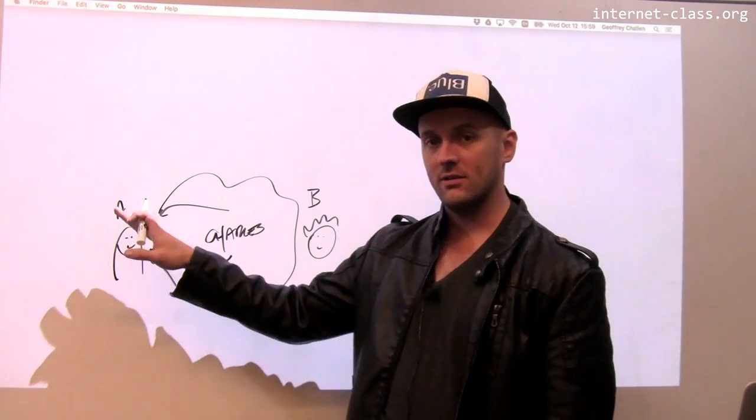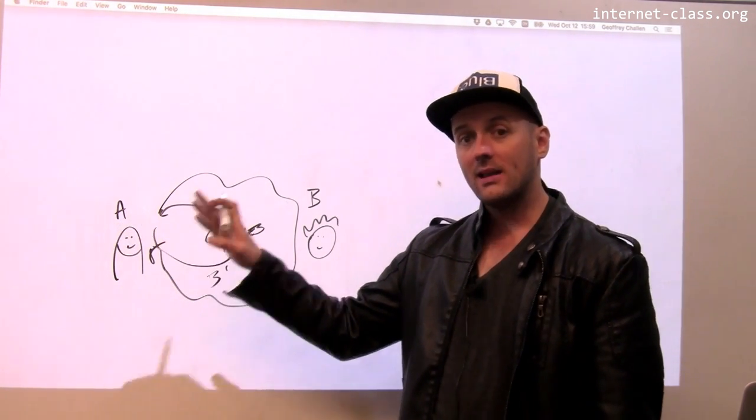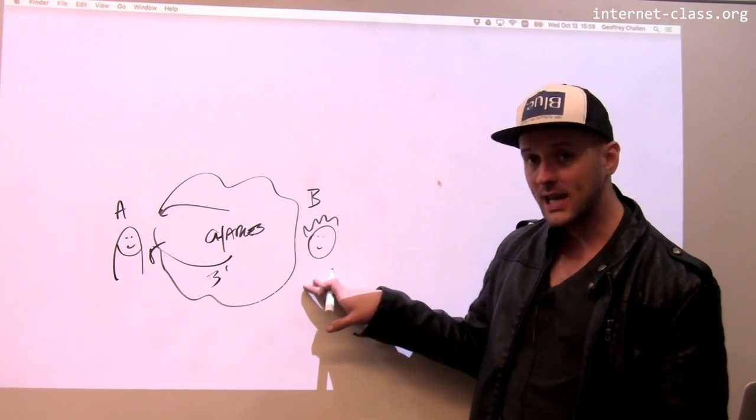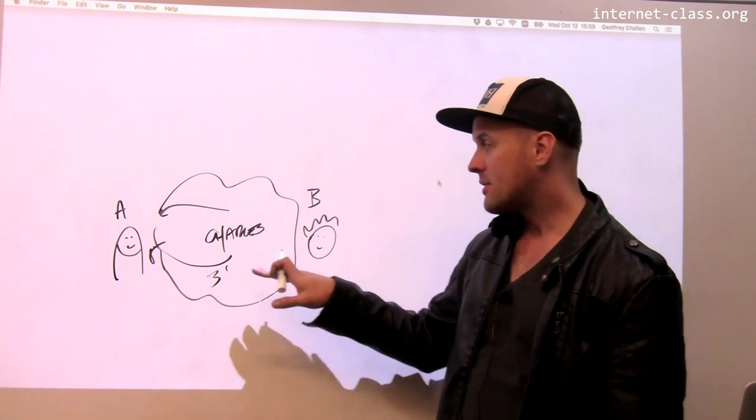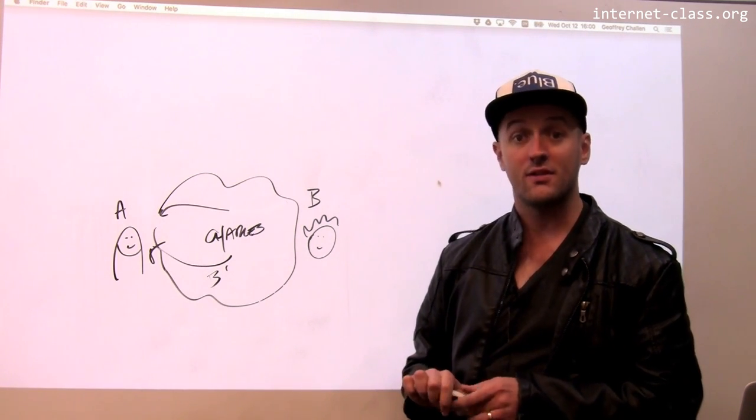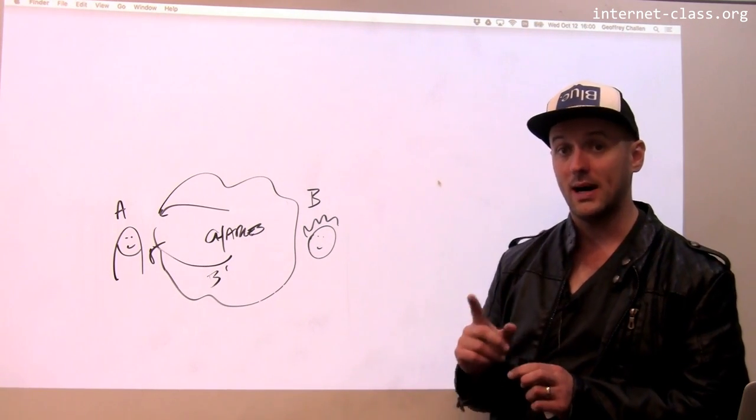So when Alice asks for Bob's public key, Charles sends back his own public key, and then Alice will send an encrypted message thinking that only Bob can decrypt it with Bob's private key. But in reality, Charles is going to grab that message as well and decrypt it himself, and he's going to intercept the communication between Alice and Bob.